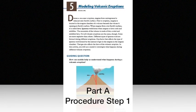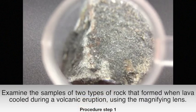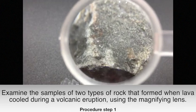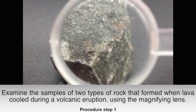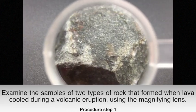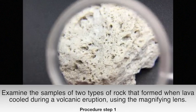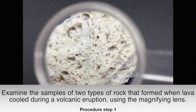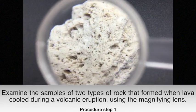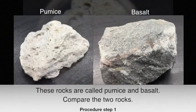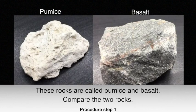Part A, Procedure Step 1. Examine the samples of two types of rock that formed when lava cooled during a volcanic eruption using the magnifying lens. These rocks are called pumice and basalt. Compare the two rocks.